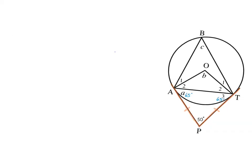Moving on to angle B: angle B is at the center of the circle, so AO and OT are the same length because they are both radii. This forms an isosceles triangle, meaning angle A2 and angle T2 are equal. To find angle A2, we remember that a tangent is always perpendicular to a radius, so angle OAP equals 90°.